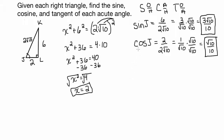And now for the tangent of angle J. Tangent is opposite over adjacent. Opposite is 6, adjacent is 2. So the tangent of J is 6 over 2, which simplifies to 3.